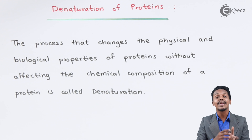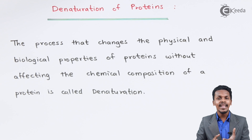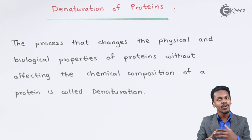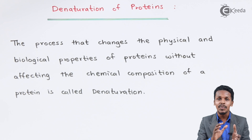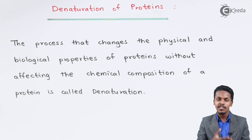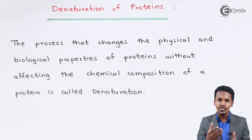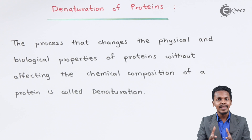Denaturation not only occurs while boiling an egg, it can also occur in the curdling of milk. In that case, the milk consists of bacteria and because of that fermentation occurs, causing a change in the physical property of the milk proteins. This change in physical property due to change in pH or heat is known as denaturation of proteins.